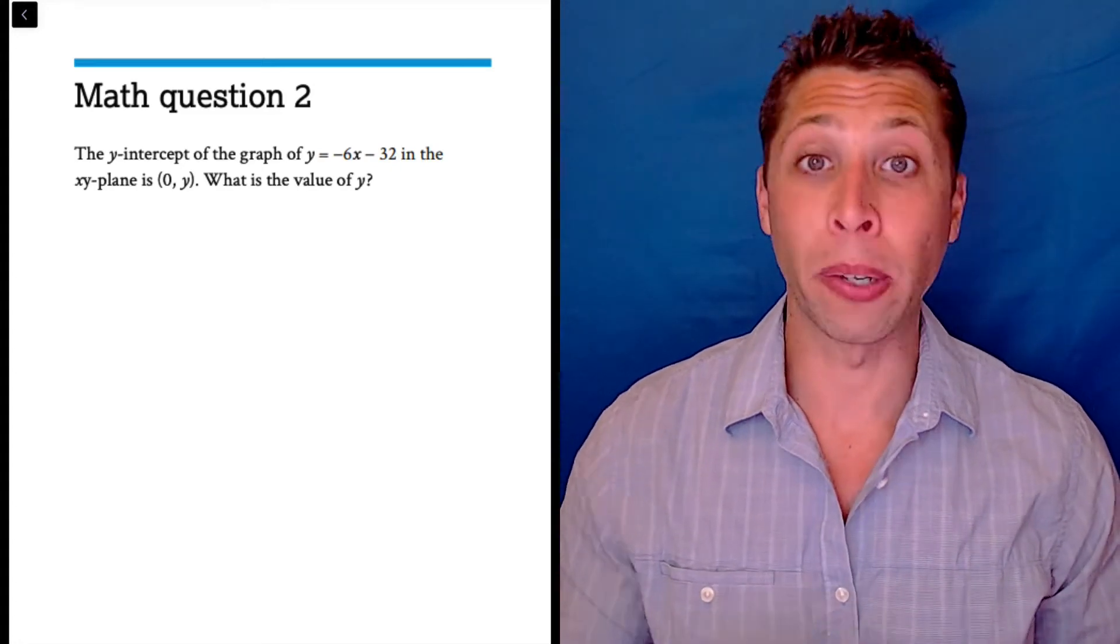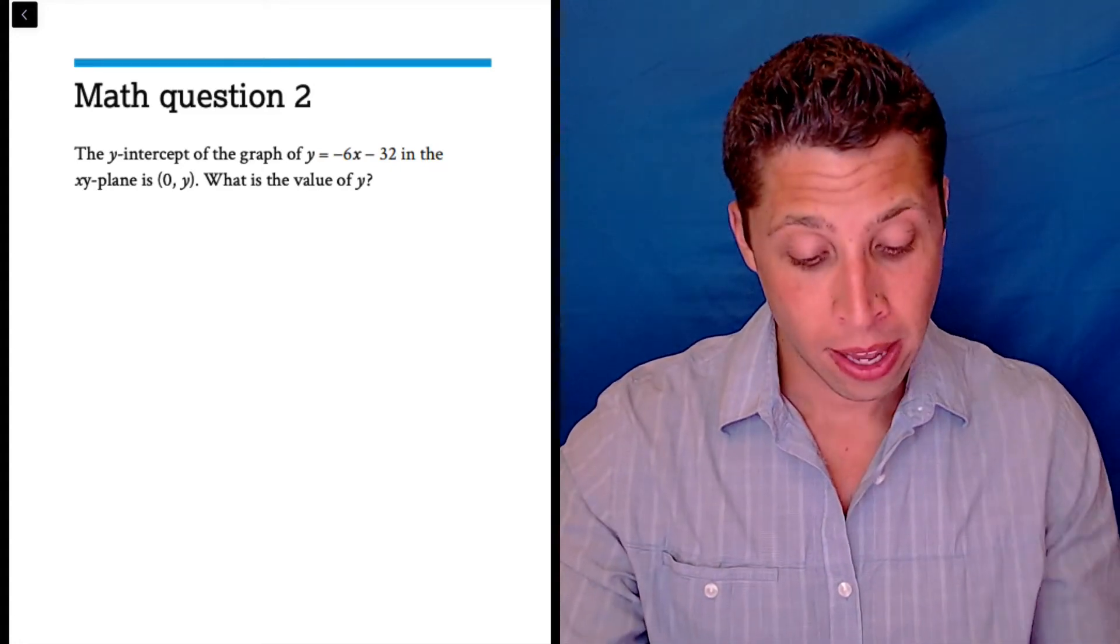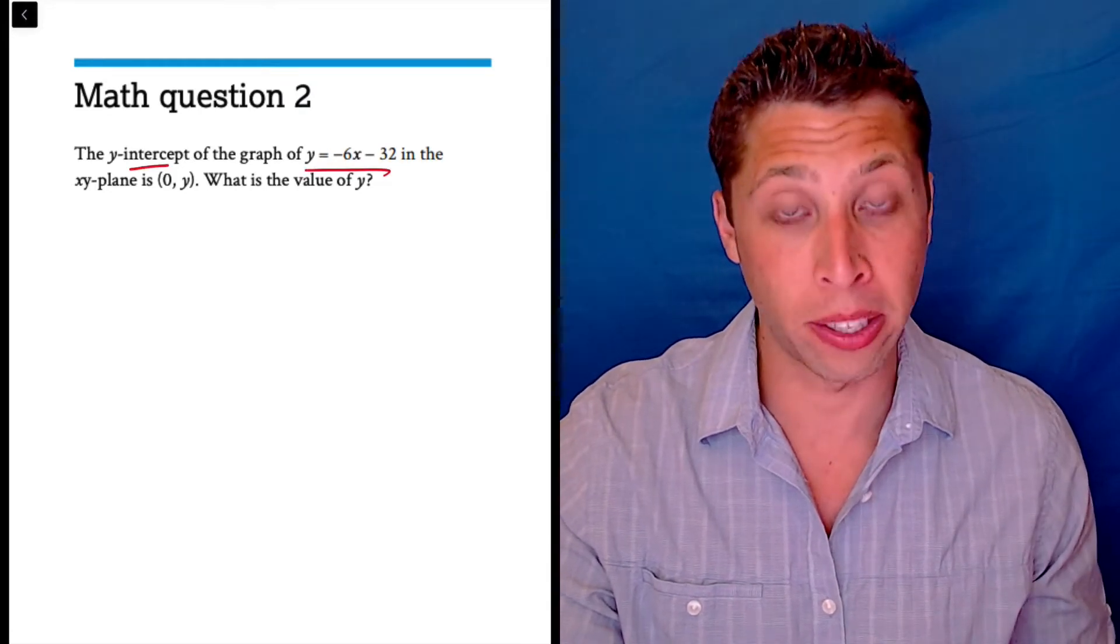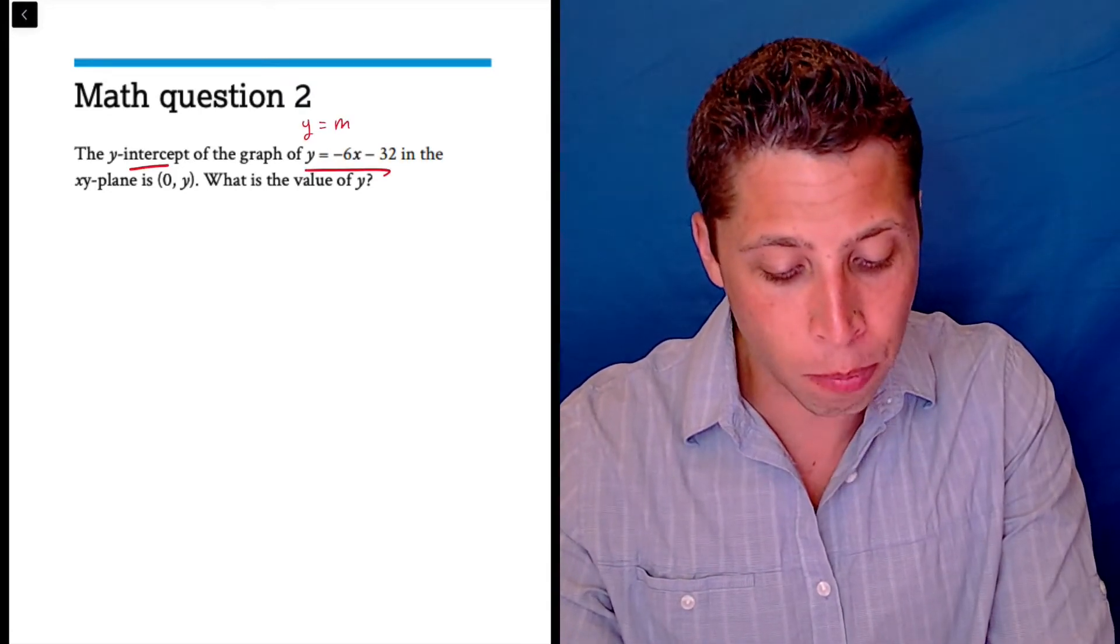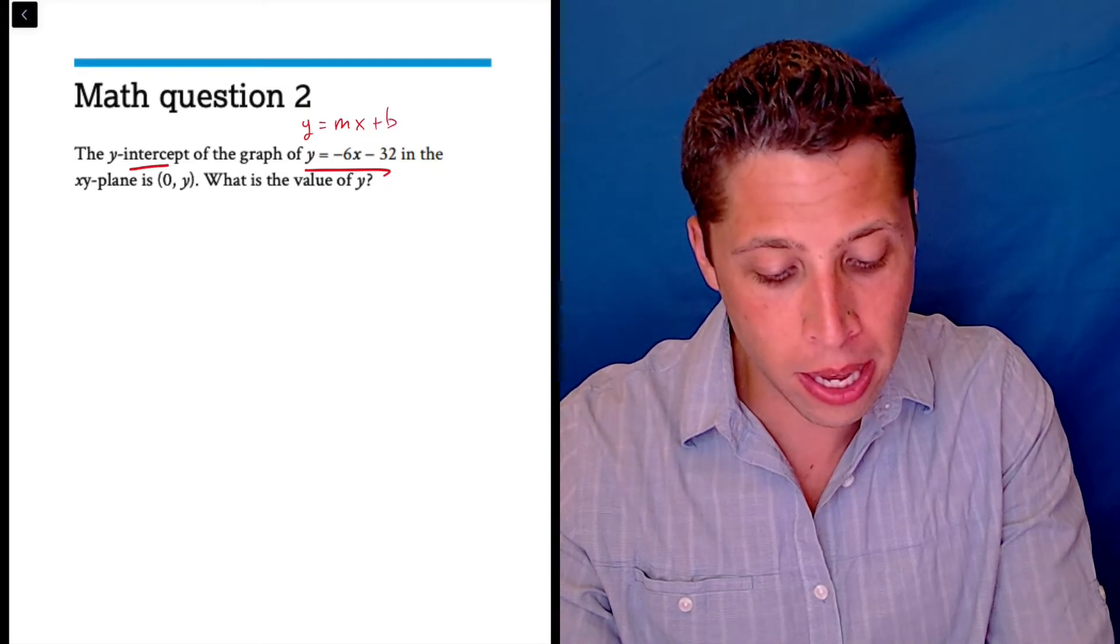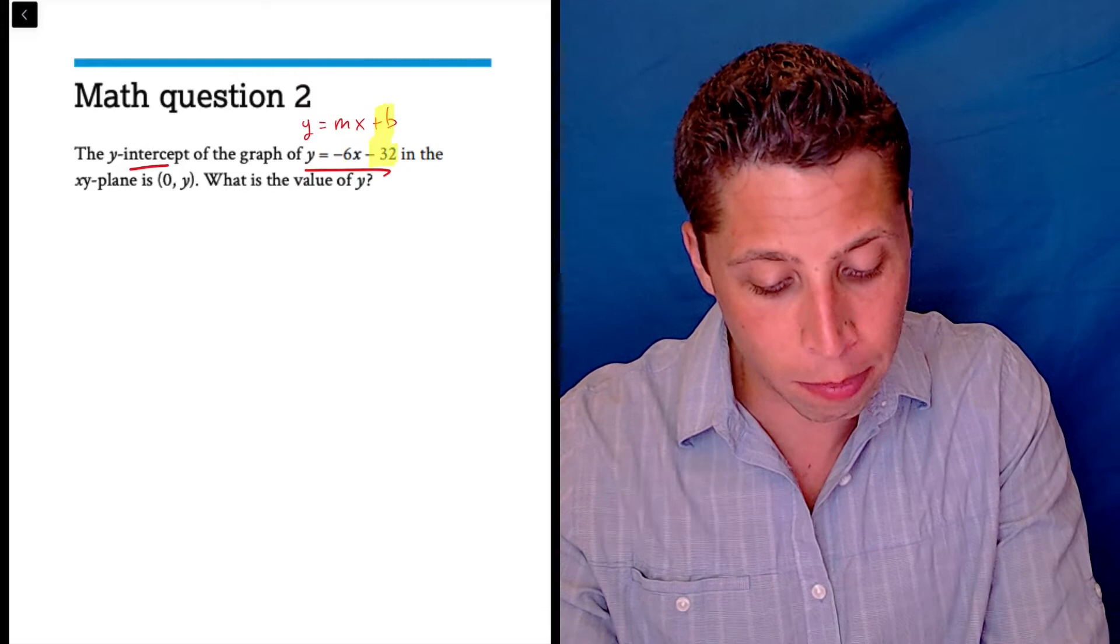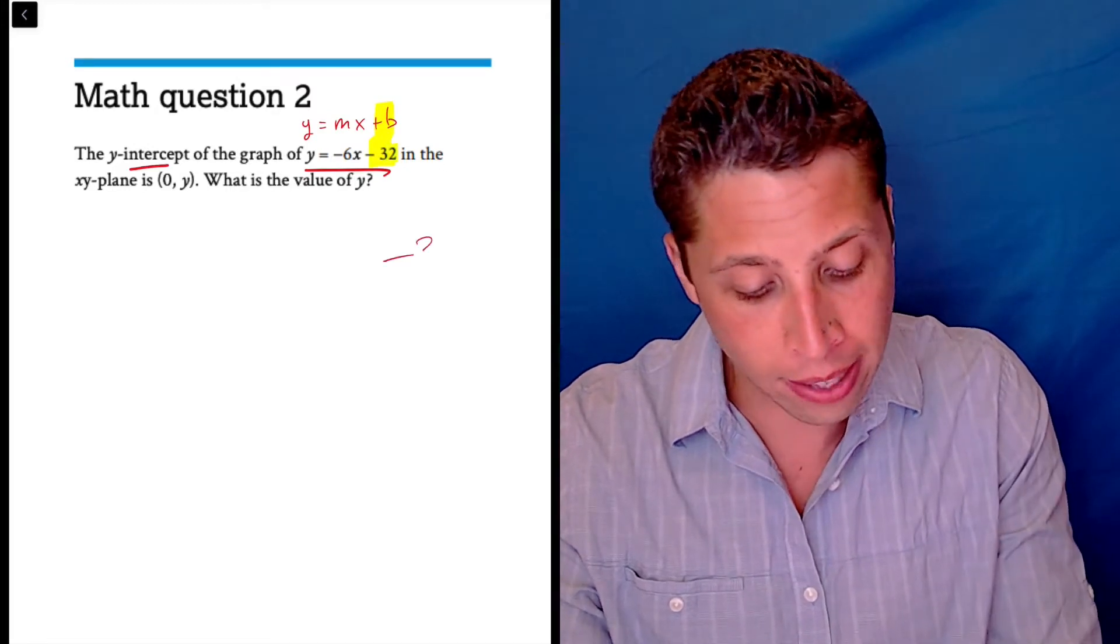This is the kind of question that a lot of people can just get in two seconds. They know that if they're looking for the y-intercept and we have a line, which is what this is, we're just matching it up with y equals mx plus b, and the b portion is what we're looking for. So that means it's going to be negative 32, and that is the answer.